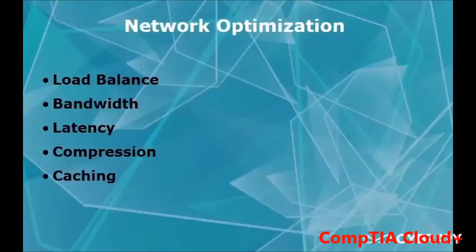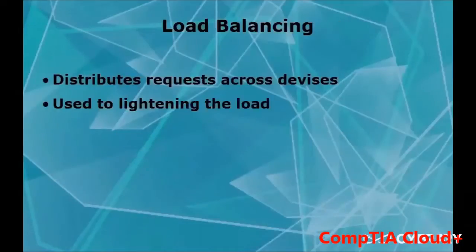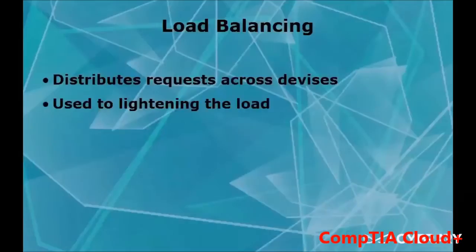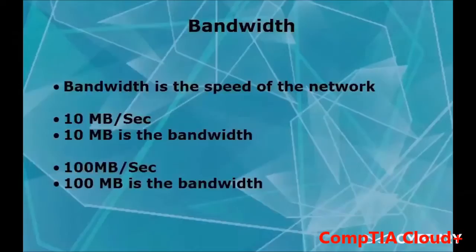The next topic is network optimization. In network optimization we have load balancing, bandwidth, latency, compression, and caching. Load balancing is distributing the load so that instead of one router being overworked, the load is shared — for example, having two routers installed side by side, each with a line going out to a different ISP like Verizon and Comcast, allowing a distribution of load.